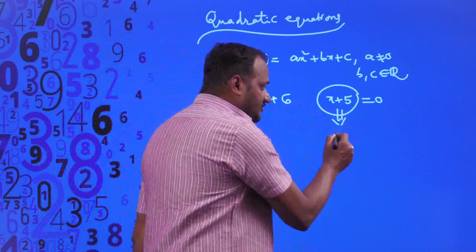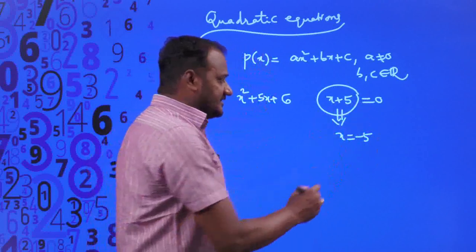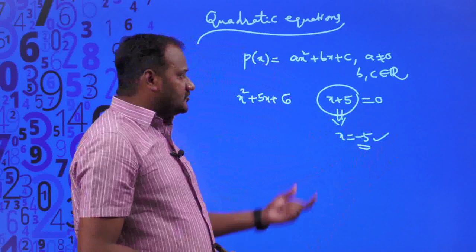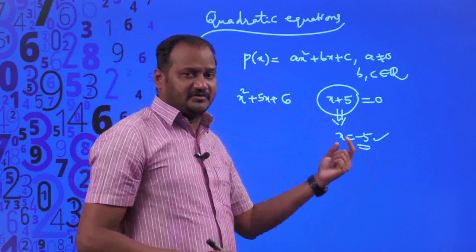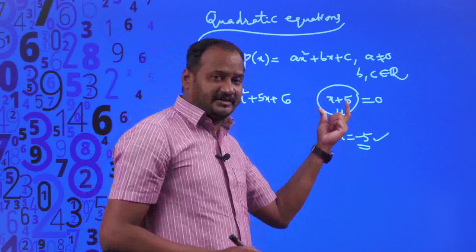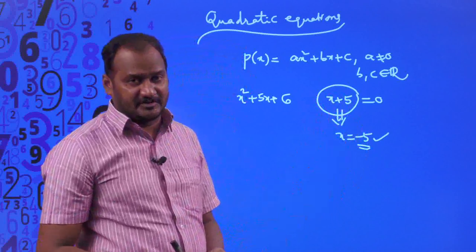For x = -5, x + 5 will become 0. So -5 is said to be a zero of the polynomial. There is only one value of the variable which makes the polynomial 0; that only one value of the variable for this particular linear polynomial is said to be a zero of the polynomial.